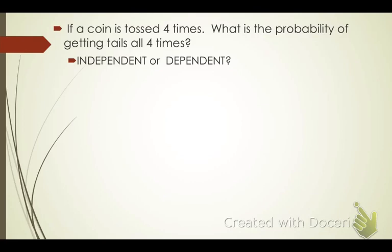If a coin is tossed four times, what is the probability of getting tails all four times? Are these independent or dependent events? Every time I toss a coin, it's completely independent from the time before. So this would be like saying tails and tails and tails and tails — these are independent events.